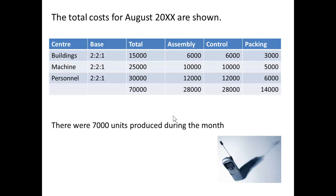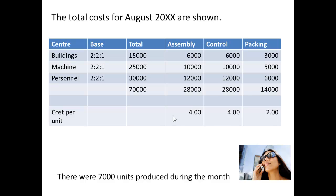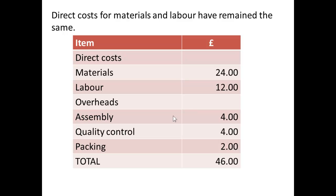They produced 7,000 units during that month, so I can now work out the cost per unit by dividing the totals for assembly, quality control, and packing by 7,000. That gives £4 per unit from assembly, £4 per unit from quality control, and £2 per unit from packing. Adding everything up: direct materials £24, direct labour £12, assembly overheads £4, quality control overheads £4, packing overheads £2 — giving a total cost per unit of £46.